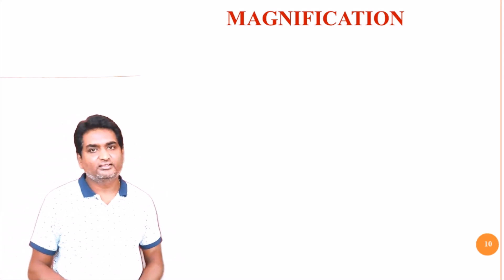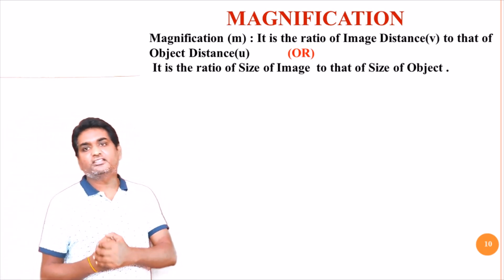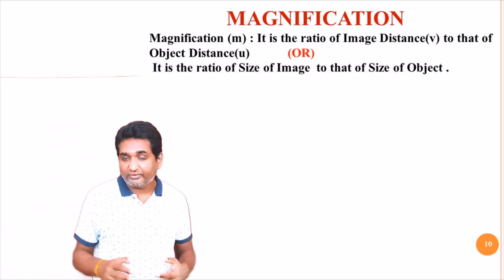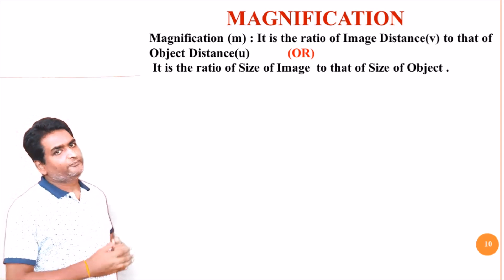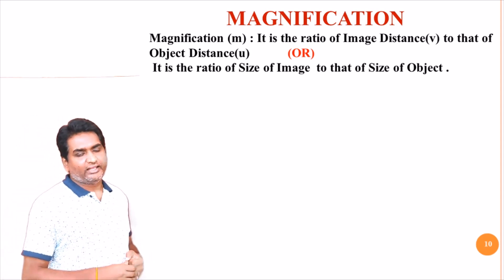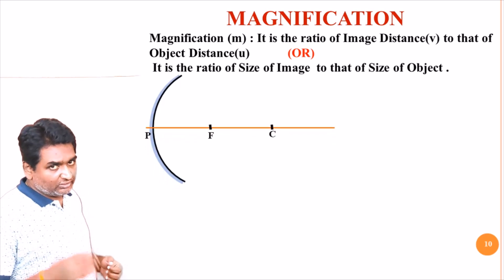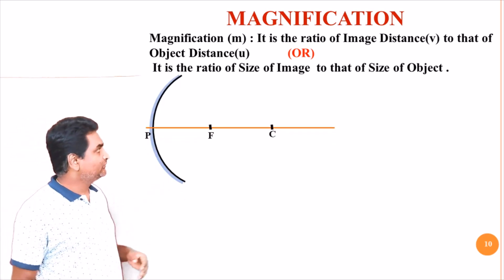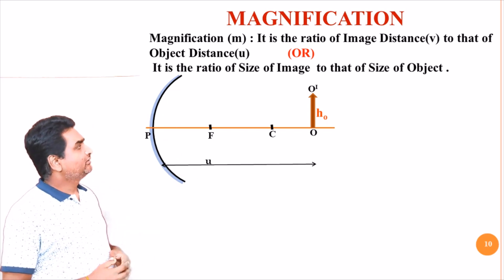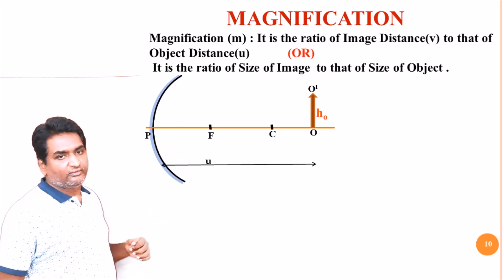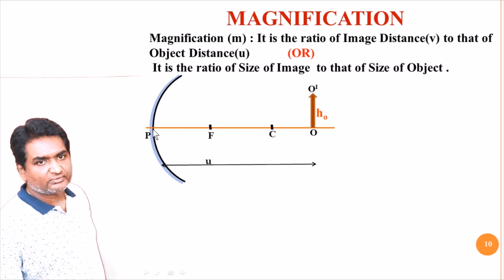Now we will discuss about magnification. Magnification is defined as the ratio of the image distance to the object distance, or equivalently the ratio of the size of the image to the size of the object. It is generally represented by small m and, being a ratio, it has no units. To derive this equation, we will consider a concave mirror with an object O O-dash of height H-naught placed at a distance U from the pole.